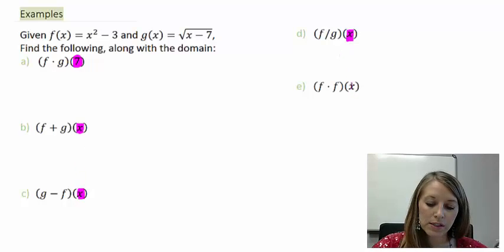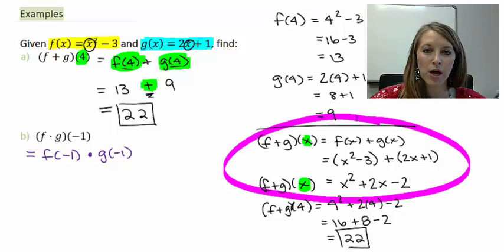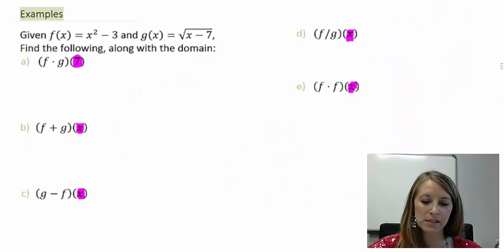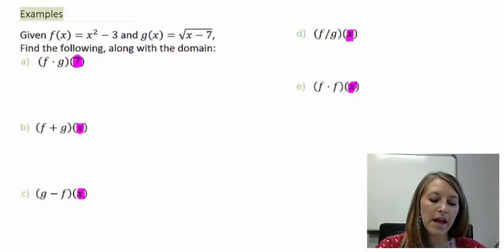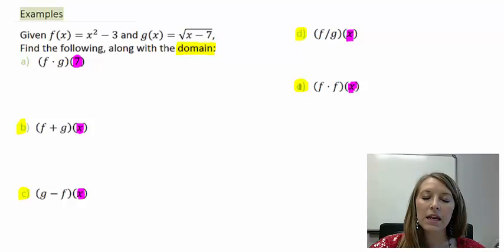I want to do quite a few different things with this — there are five different parts. The first one substitutes in a number like in the last examples, but the last four parts leave it as x, so we don't substitute any number. We figure out how to add, subtract, multiply, or divide those functions depending on what each part asks. Notice it also asks you to find the domain, which applies to the last four parts since x is a variable. In the next video I'll come back and work these out. Let's go.